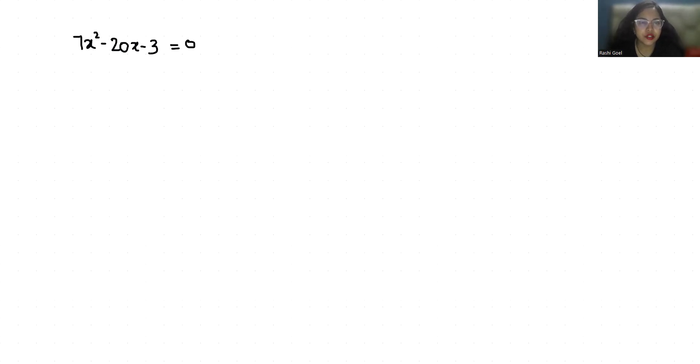Let's start with today's video solution. First, I am going to compare with the standard form of quadratic equation, that is ax square plus bx plus c equals 0. The value of a is 7, the value of b is minus 20, and the value of c is minus 3.